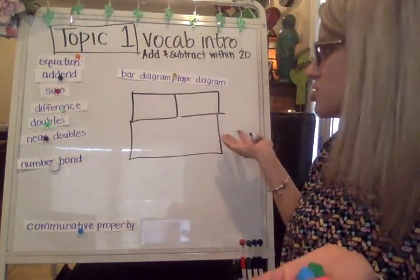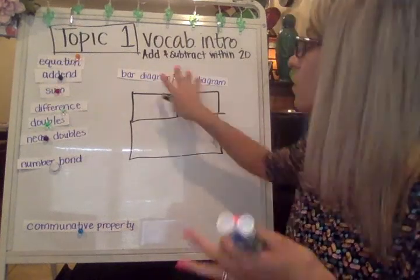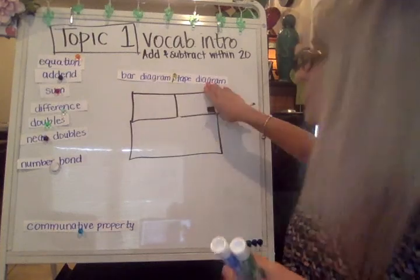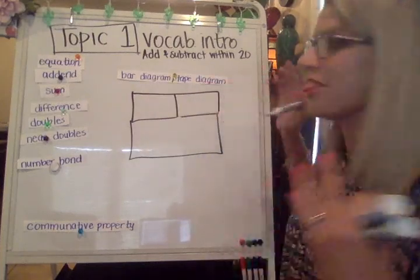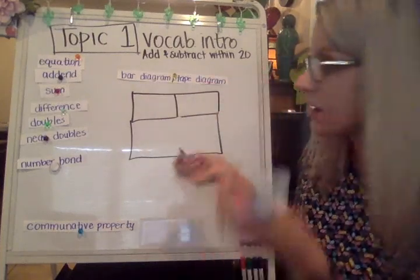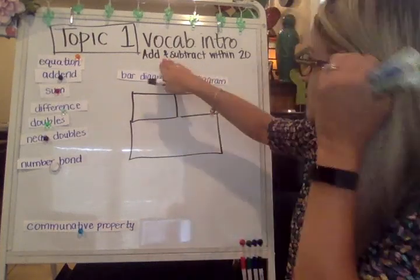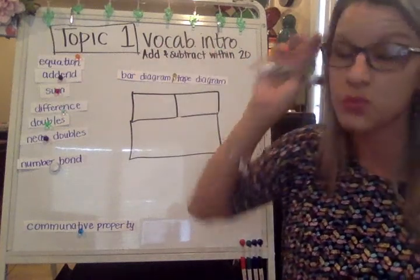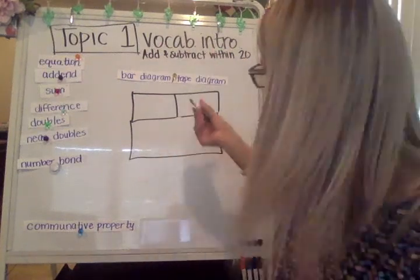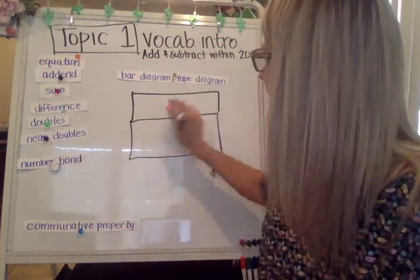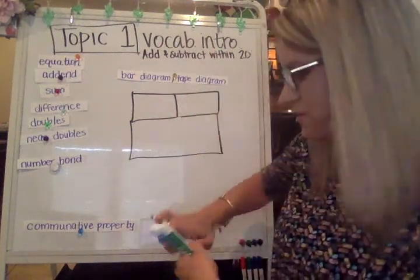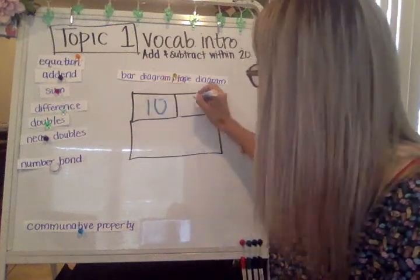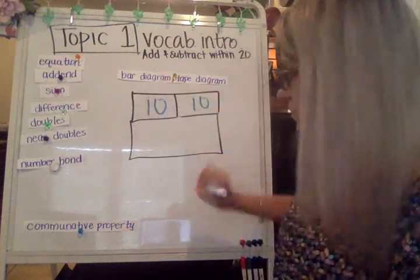They're interchangeable — it could be called a bar diagram or it could be called a tape diagram; they mean the same thing. Since we're doing addition and subtraction within 20, I don't want my numbers to go greater than 20, so I'm going to do 10 and 10. Imagine this as 10 plus 10.